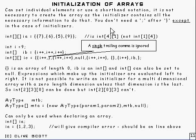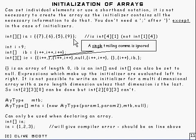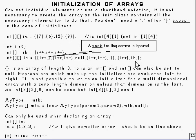Then we talked about initialization of arrays with an array initializer. You have to have a semicolon in there — that's the exception to the rule that you don't generally need a semicolon after a right curly bracket. You can have a single trailing comma, but no more than one, at the end of each initializer. An empty initializer gives you an array of length zero, and you can have expressions in the initializer.